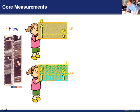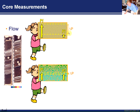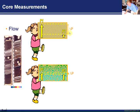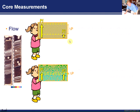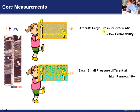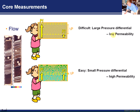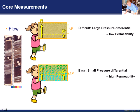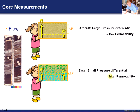So that's what we're talking about here, the difference in pressure from one end to another. And when it's difficult, there's quite a large pressure differential, and we say there's a low permeability. And when it's easy, there's a small pressure differential, and there's a high permeability.